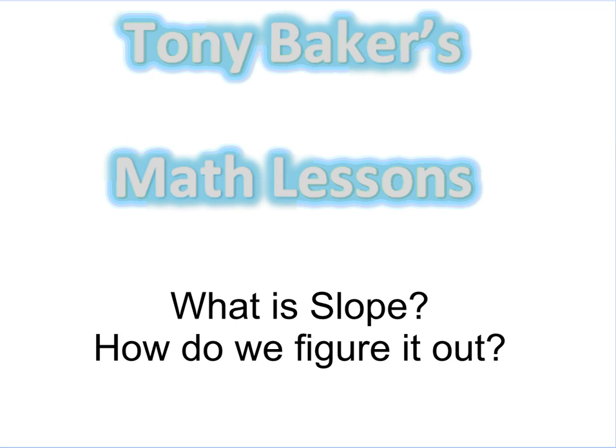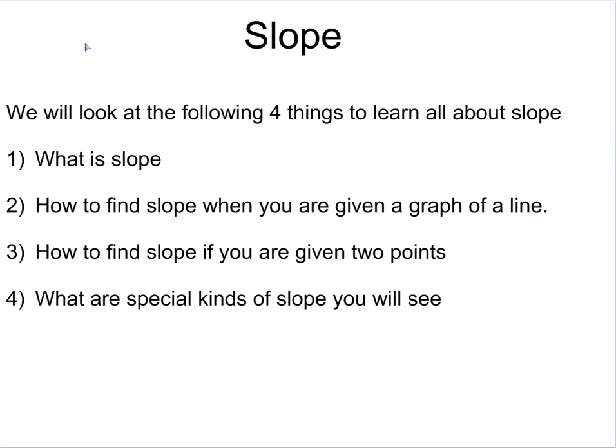In this lesson we're going to figure out what slope is and how we actually find it, given a variety of situations. There's four things we're going to look at: What is slope? How to find slope when we're given a graph of a line? How to find slope if you're given two points? And what are some special kinds of slope that we're actually going to see?